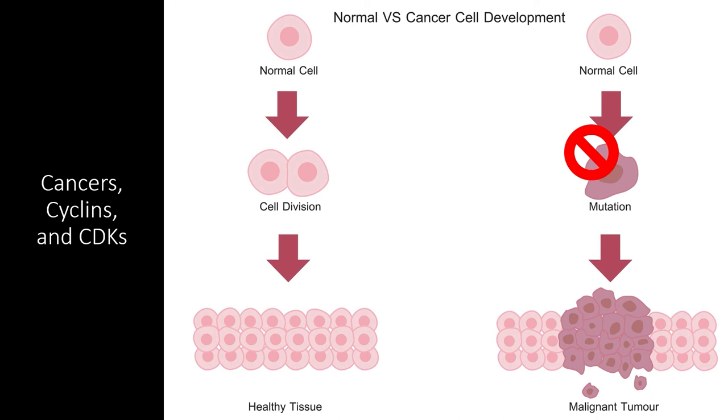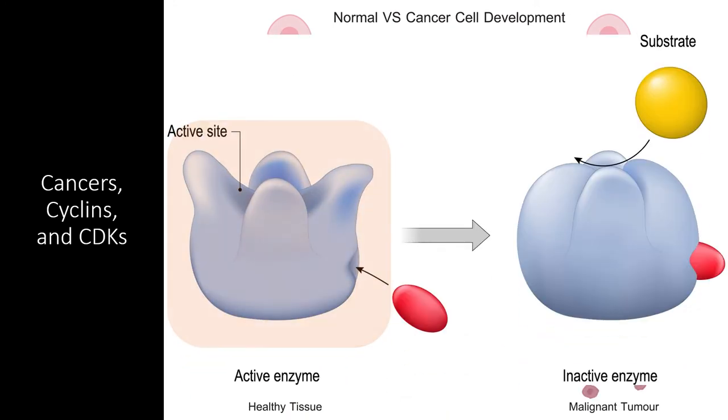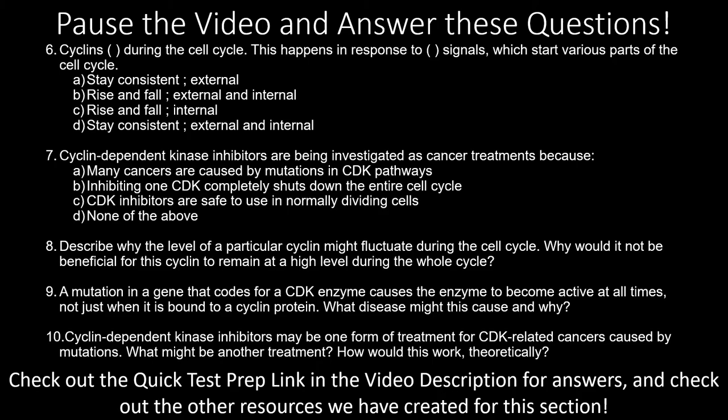But, just by knowing which cyclins and CDKs have become disrupted in a specific type of cancer, researchers can develop medicines to disrupt these pathways and shut down cell division. For example, if you have identified the CDK enzyme that is driving a specific type of cancer, you can develop a CDK inhibitor that shuts down this enzyme and therefore stops the cell cycle. Still, many problems remain, such as how to deliver the inhibitor to only cancer cells, and how to deal with cancer cells that have already created tumors.